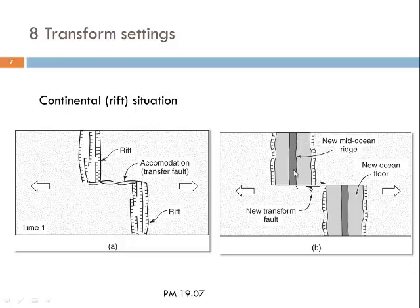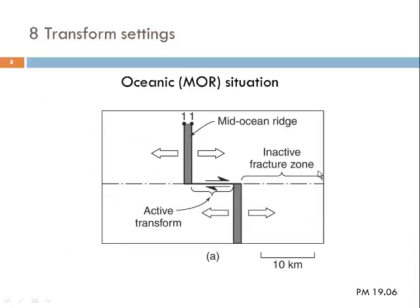Fracture zones develop along strike in the continuation of such active transform faults, but you need to take into account that both parts belong to the same plate and move in the same direction — so we cannot expect a lot of seismic activity along such fracture zones. Fracture zones are only active if the spreading rate of one segment of a mid-oceanic ridge is larger or smaller than the neighboring segment, requiring different movement velocities and displacement along the fracture zone.